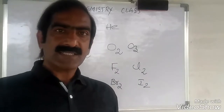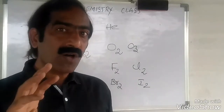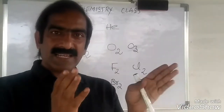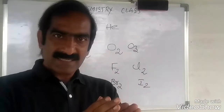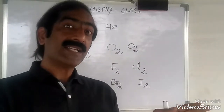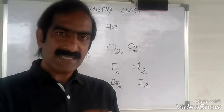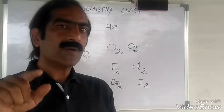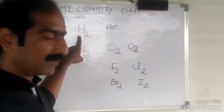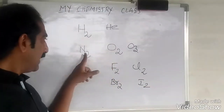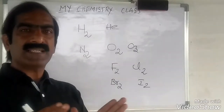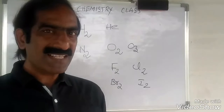Dimers and trimers are known as molecules. How are they formed? Elements are combined by covalent bonding — that means atoms of elements combine by covalent bonding and form molecules. H2 is a molecule, O2 is a molecule, N2 is a molecule, F2 is a molecule. Dimers and trimers are named as molecules.